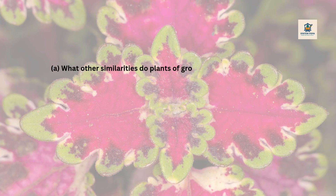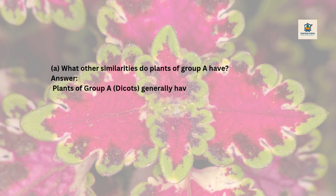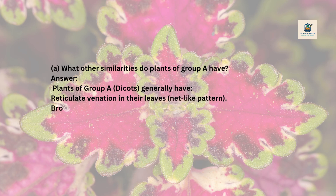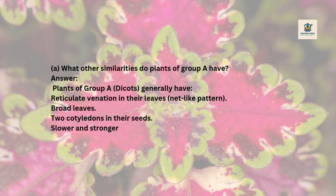What other similarities do plants of group A have? Answer: Plants of group A (dicots) generally have reticulate venation in their leaves (net-like pattern), broad leaves, 2 cotyledons in their seeds, and slower but stronger root growth due to taproots.